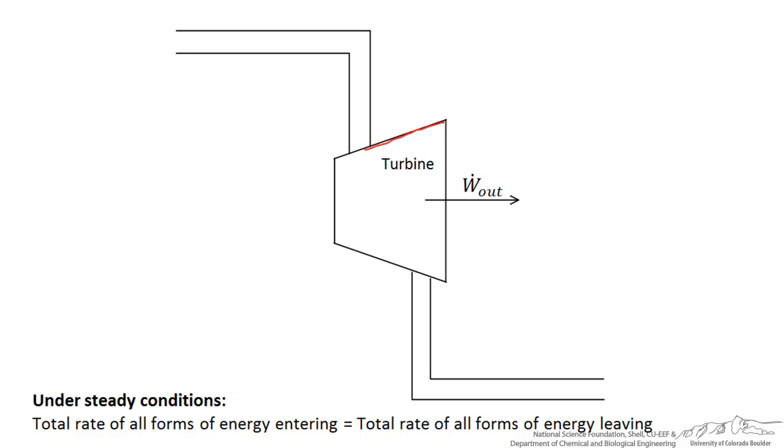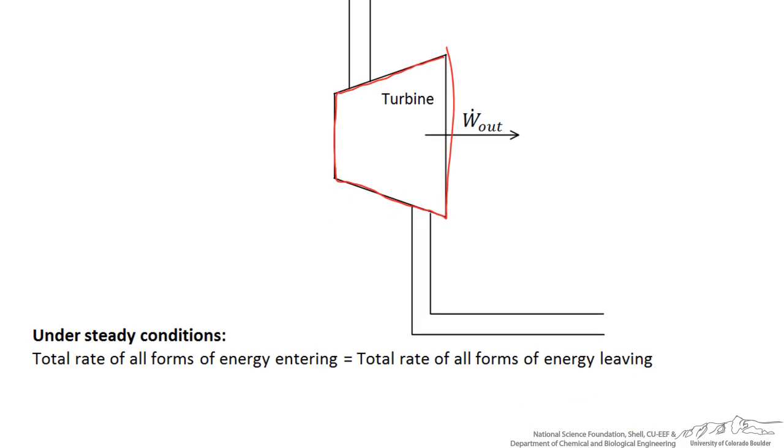So I will draw a control volume around the turbine and what we are concerned with are all the different ways energy can flow into it. Obviously energy will flow in from the high pressure, high temperature steam entering the turbine. It will leave as the lower temperature, lower pressure steam. It will also leave as shaft work which we desire.